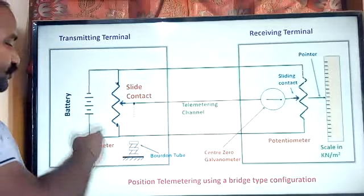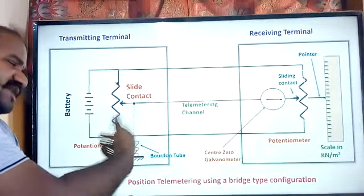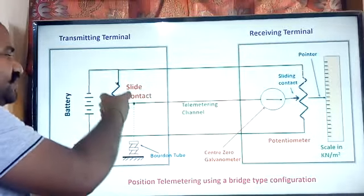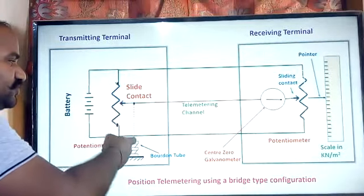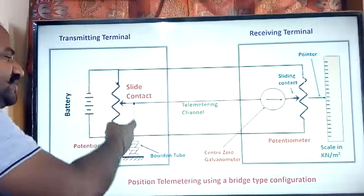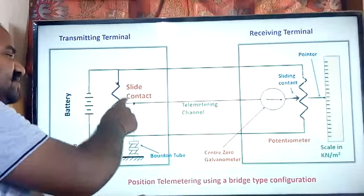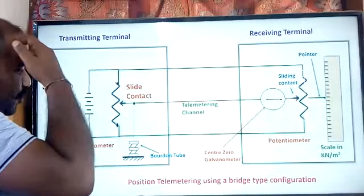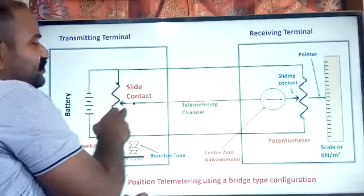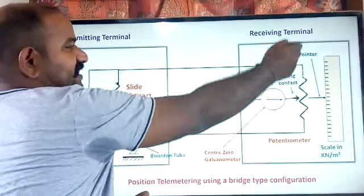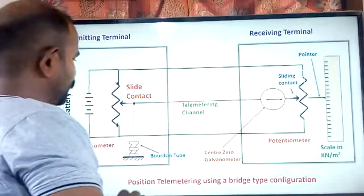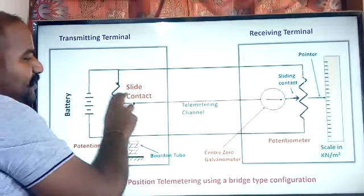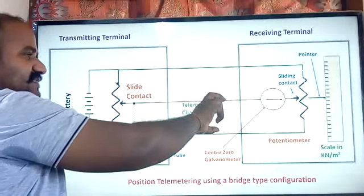This Bourdon tube is used as a transducer. Based on this transducer, the sliding contact changes its position in the upward or downward direction. Whenever there is a slight change in the position of this sliding contact, the same change is going to be reflected at the receiving end. When there is a change in the sliding contact position, this change is transferred through the telemetering system.